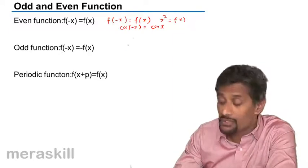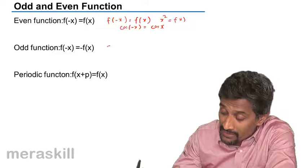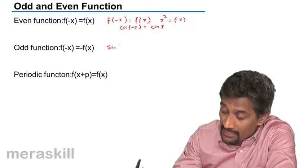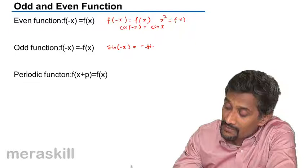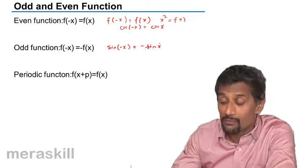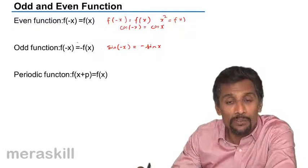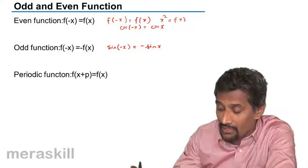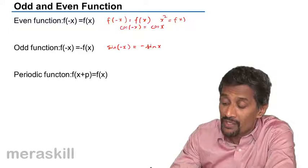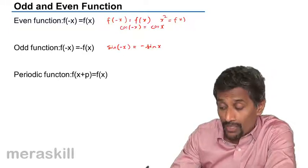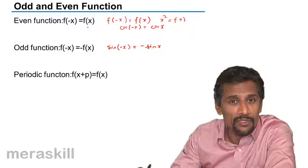An odd function is one in which f(-x) = -f(x). For example, sin(-x) = -sin(x). In simple words, an odd function becomes the opposite of the function when the value of x is negated — when the value of x is made opposite to what you are substituting.